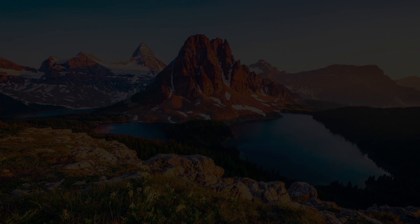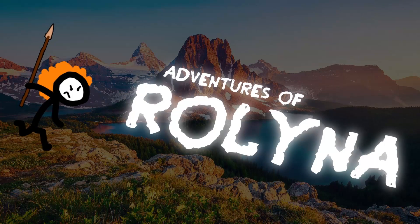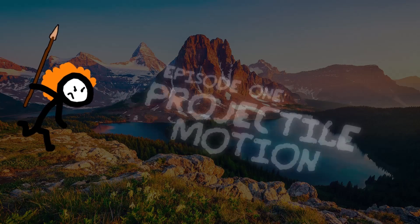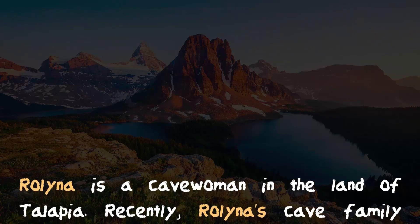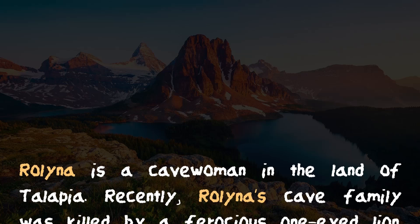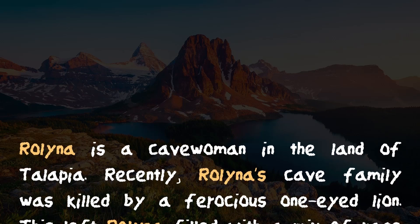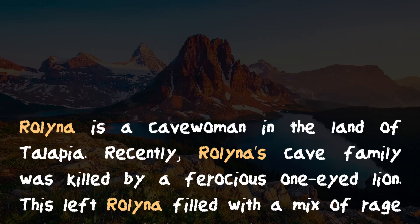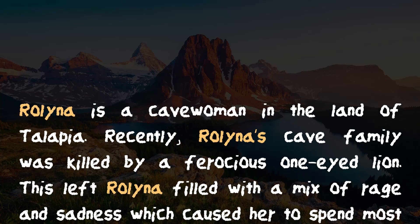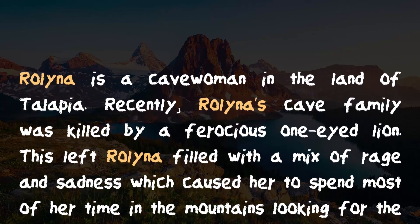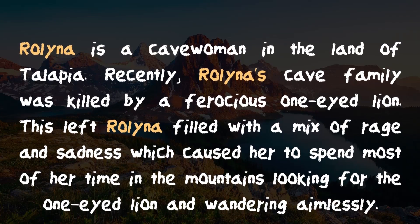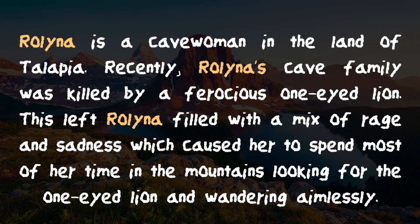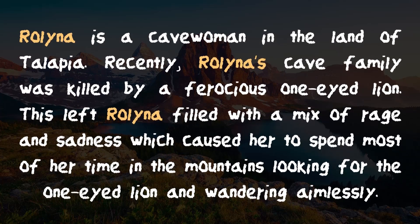Hi everyone, welcome to Projectile Motion. This time we'll be learning about Projectile Motion through the story of Rolina, a cavewoman in the land of Tilapia. Recently, Rolina's cave family was killed by a ferocious one-eyed lion. This left Rolina filled with a mix of rage and sadness, which caused her to spend most of her time in the mountains looking for the one-eyed lion and wandering aimlessly. Let's see how it all turns out.